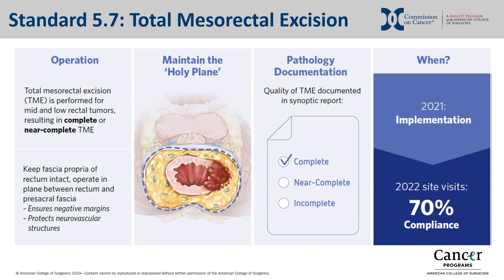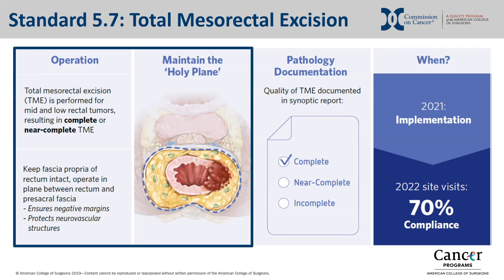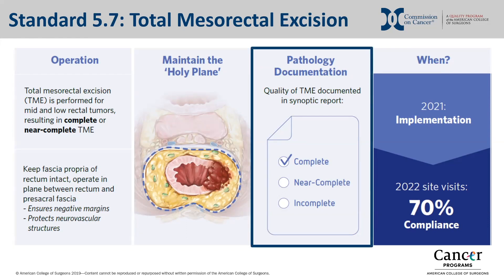The standard is such that: one, TME is properly performed for patients undergoing curative intent radical surgical resection of mid to low rectal tumors centered at or below the peritoneal reflection, dissecting in the correct plane and keeping the fascia propria of the rectum intact. Two, TME should result in a complete or near complete total mesorectal excision. And three, pathology reports for resections of rectal adenocarcinoma must document the quality of the TME resection as complete, near complete, or incomplete in the synoptic format.